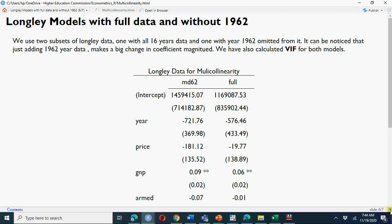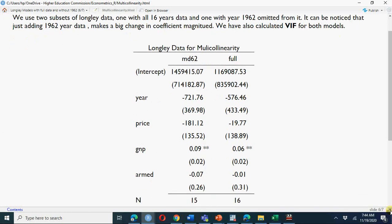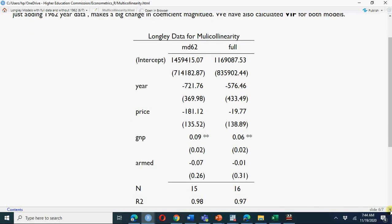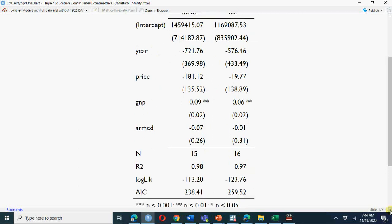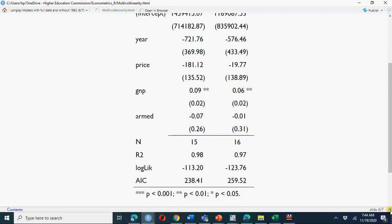So you see, by including only one observation or by dropping one observation, most of your results become—the coefficients change by a large magnitude. Your R square is still very high.